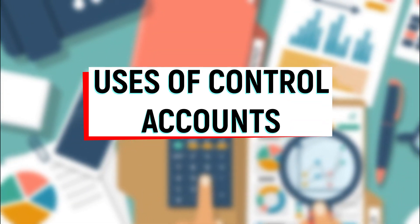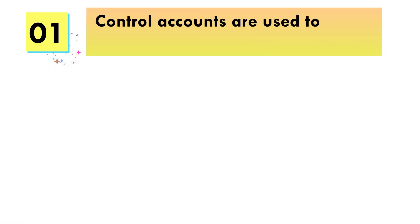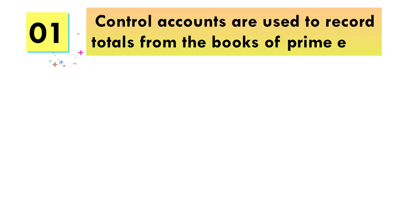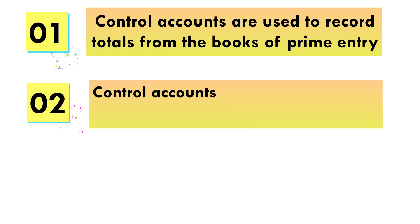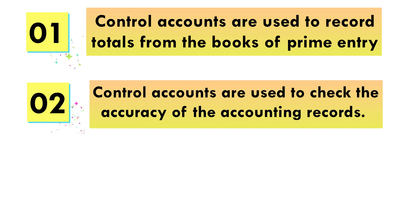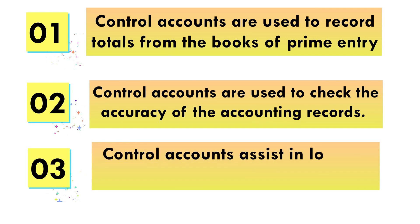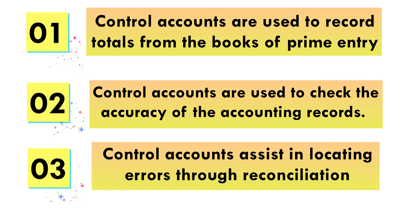Uses of Control Accounts: First, control accounts are used to record totals from the books of Prime Entry. Second, control accounts are used to check the accuracy of accounting records, and this is done by comparing the balances in the accounts with the personal ledgers. Third, control accounts assist in locating errors through reconciliation.